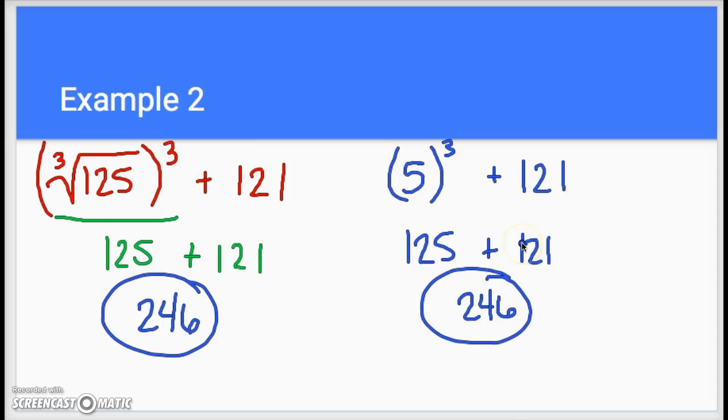And then you add the 121. So either way, if you could see right from the start that the cube root symbol and that cubed cancel each other out, then perfect, go about it that way. If you would rather work it out like this and it helps you see it a little better, you can do it that way as well.